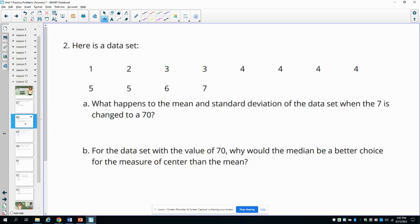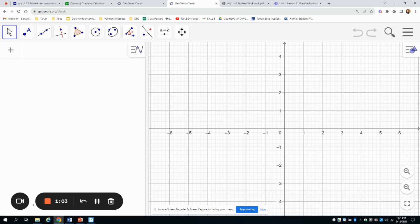Number two, here's a data set. What happens to the mean and the standard deviation when the seven is changed to a 70? So for this one, I'm going to actually use GeoGebra to type this in.